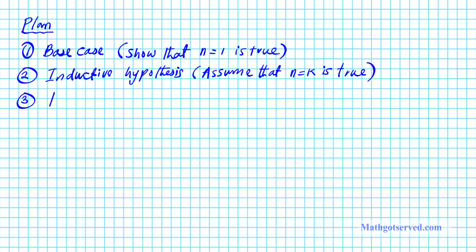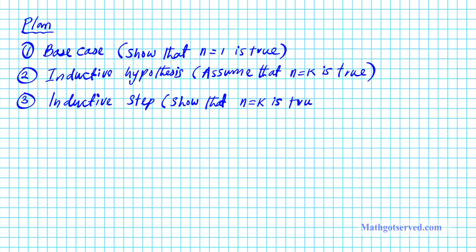The third part is the inductive step. For the inductive step, we are going to show that n equals k is true by assumption, and that induction implies the next step, n equals k plus 1, is also true. If you can show all these three, then by induction we can conclude that the statement is true for all positive integers.